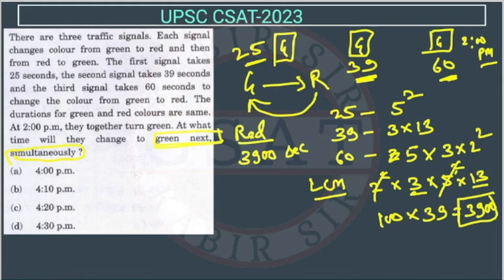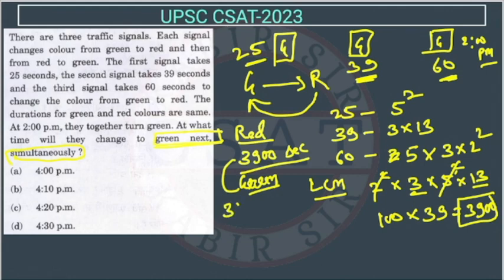So after 3900 seconds they all turn red, and then from red to green again, because the duration is the same as stated in the question. So they will change from red to green after another 3900 seconds — so that is 3900 plus 3900, which equals 7800 seconds.